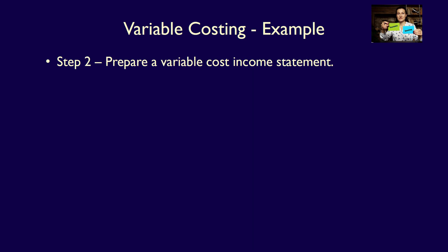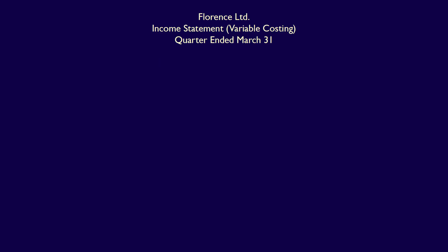Step two is to prepare the variable costing income statement. We'll start with the company name, the name of the statement, and the date: Florence Limited, Income Statement — Variable Costing, quarter ended March 31st. We then calculate the sales revenue as $125 per unit selling price multiplied by 9,000 units sold, which is equal to $1,125,000.